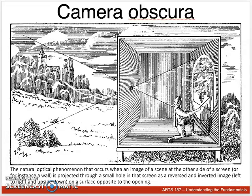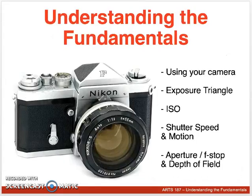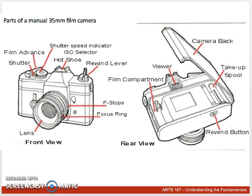So the cameras that you're using today, and the cameras that have been used for decades, are based on this idea of the camera obscura. The cameras are basically a light-tight black box with a small hole in it that lets in light. What we're going to talk about today are some of the ways that you can control the light that comes into the hole, how it comes in, how long it comes in, and the different effects that the light has on your image and the way that your image looks.